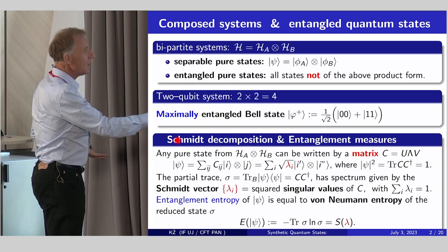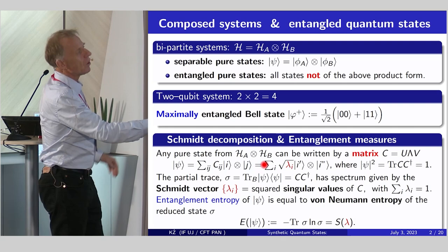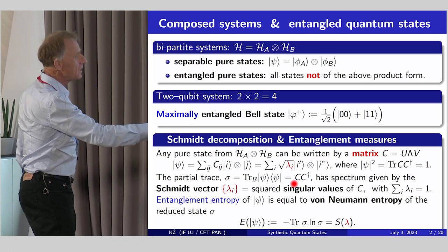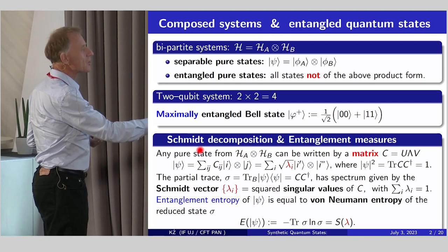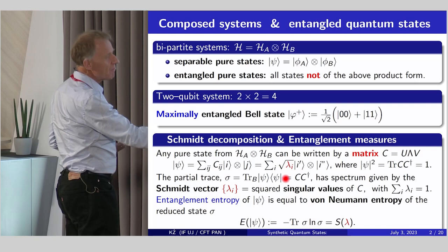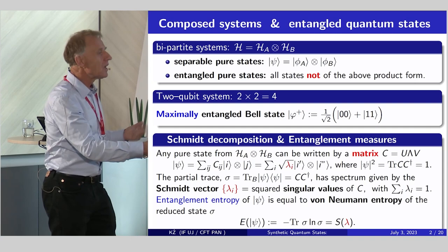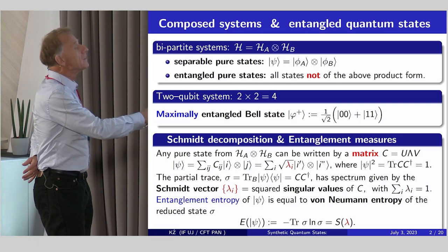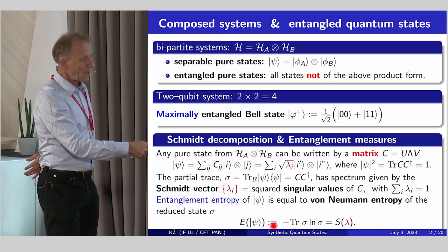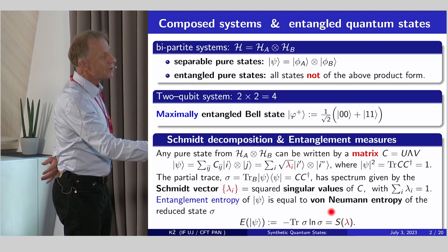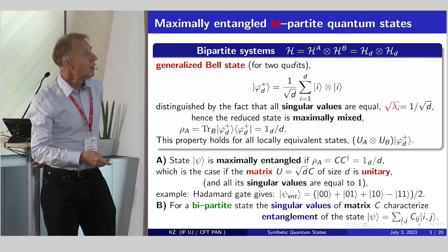Technically, you can take any state psi, bipartite, and expand it in a product basis. In one language it's called Schmidt decomposition, in another, singular value decomposition of this coefficient matrix C. Now those lambda singular values will determine entanglement. Basically, entanglement can be defined as degree of mixing of partial trace. Partial trace state sigma is just positive matrix C C-dagger. So in its spectrum, lambda determines entanglement.